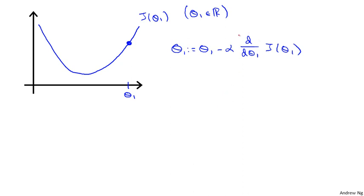As an aside, this derivative term — if you're wondering why the notation changes from partial derivative symbols to d/d theta, don't worry about it. Technically in mathematics we call this a partial derivative when there are multiple parameters and a derivative when there's one, but for the purpose of this lecture, think of these as exactly the same thing.